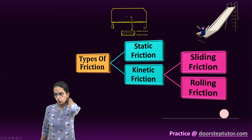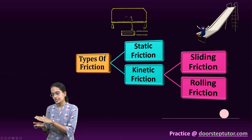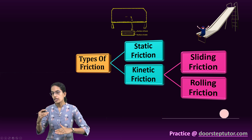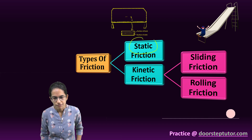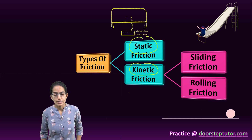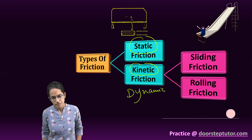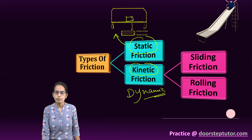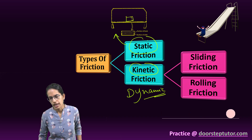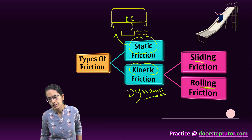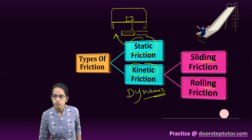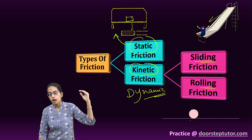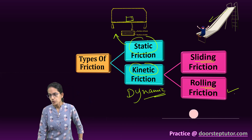Friction can be explained in two forms. When an object is at rest and a force resists it from moving, that is called static friction — for example, a book resting on a table. The other type is called kinetic or dynamic friction, which has two subtypes: sliding friction, like a person moving down a slide, and rolling friction, like a ball rolling.